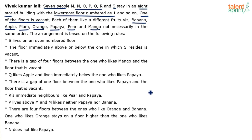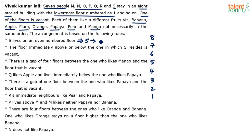The base to start with is listing down the floor numbers 1 through 8. There can be multiple possibilities, which we'll consider in different columns. The first statement says S lives on an even-numbered floor, meaning S will belong to either floor 2, 4, 6, or 8 — so there are 4 possibilities.